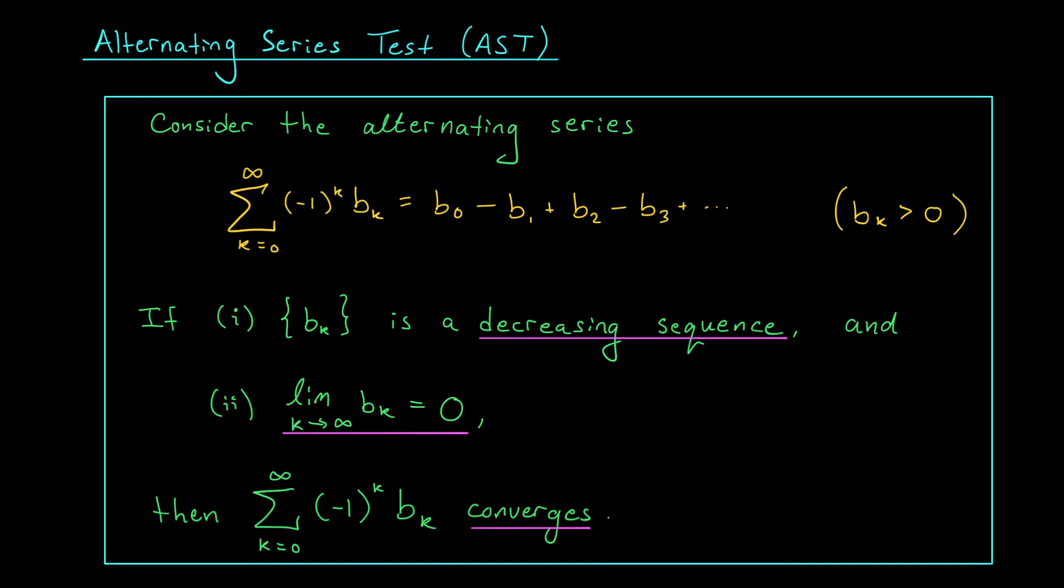Before jumping into examples, however, it's important to acknowledge what this test does not say. If we have a series where one or both of these conditions fails, we can't draw any conclusions from the alternating series test alone. If the second condition fails, then the terms aren't going to zero, and hence we can apply our test for divergence to conclude that this series diverges. If, however, we have an alternating series where this sequence bk is not decreasing, we can't draw any conclusions without doing further tests. The series could converge or it could diverge.